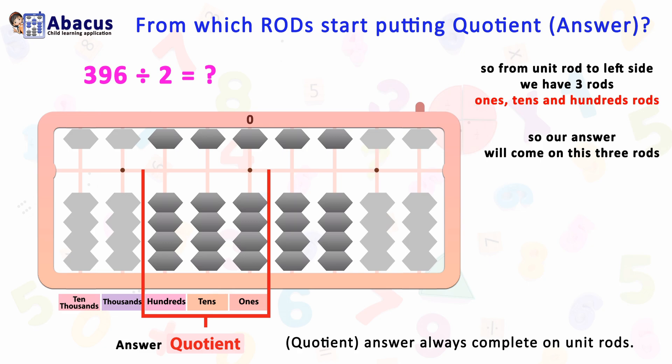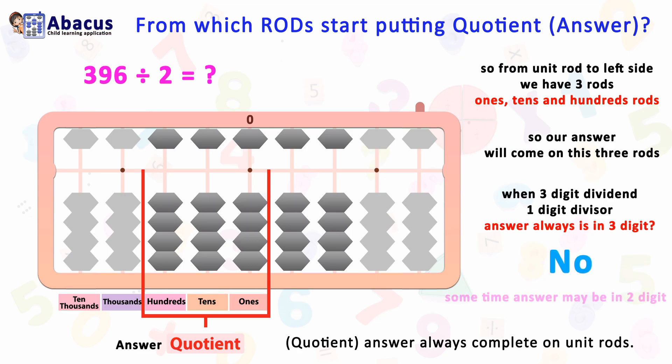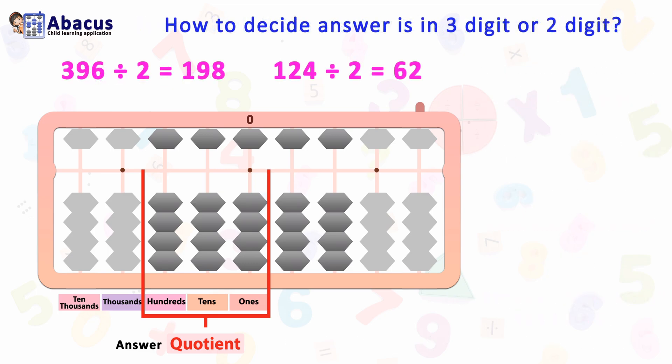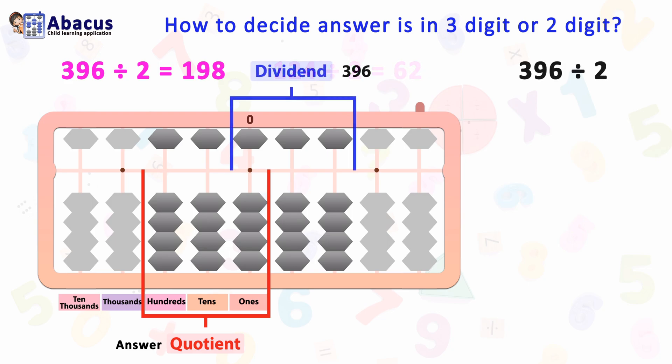Now, when we have a three-digit dividend and one-digit divisor, does the answer always come in three digits? No — there is a possibility the answer may come in two digits. For example, 124 divided by 2 gives an answer of 62. So how do we decide if the answer is three digits or two digits? Let's first check with 396 divided by 2. Here the divisor is 2, a single digit.